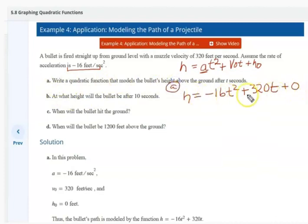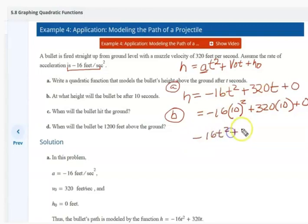Take a moment, copy that down. B, at what height will the bullet be in 10 seconds? So here we're going to substitute negative 16 times 10 squared plus 320 times 10. And then when will it hit the ground? We're going to write negative 16T squared plus 320T equals zero. And you can see now we can solve that either by factoring or the quadratic formula.